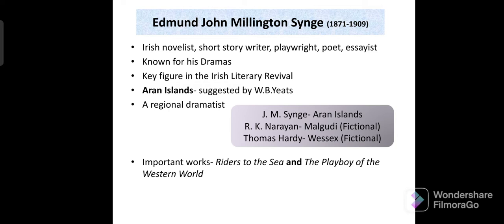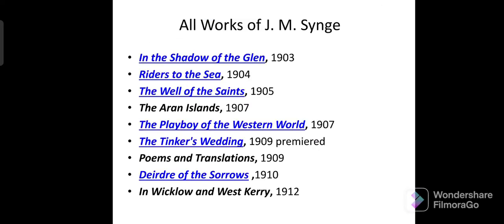He produced his masterpieces there. Two very important works of J.M. Synge are Riders to the Sea and The Playboy of the Western World. You have to focus on chronology. His first work was In the Shadow of the Glen, published in 1903. Then Riders to the Sea, published in 1904, which is a very important work.